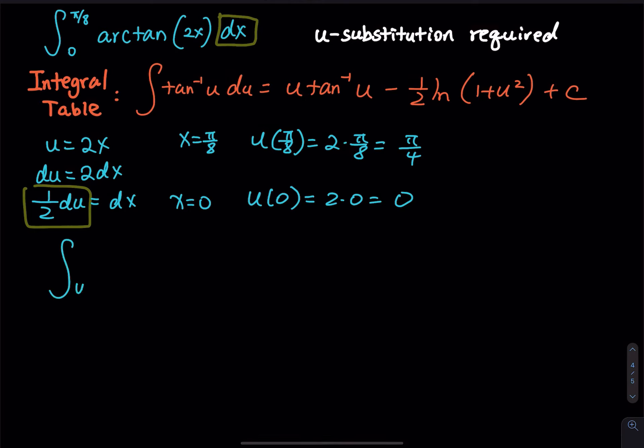So we have integral, u goes from 0 to π over 4. And then the arc tangent, I would like to keep the arc tangent in there. So we have 1 half, and then arc tangent u du. So arc tangent u, and then du.